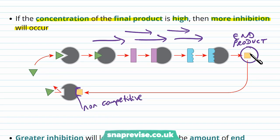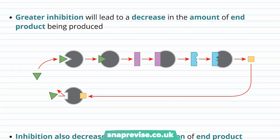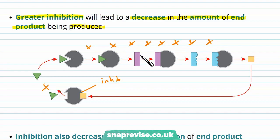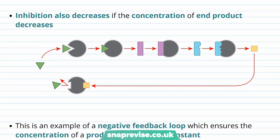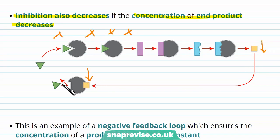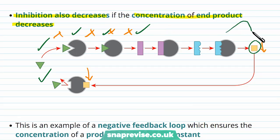So the pathway slows down: the steps after the inhibited enzyme will continue with what's left but will eventually slow down, and the amount of end product produced will decrease. Then as the concentration of the end product drops, the inhibition also decreases because it can no longer carry out end product inhibition. The enzyme becomes reactivated, the pathway starts again, and production rises. So as the product gets too high it's brought back down, and as it comes back down it rises again.